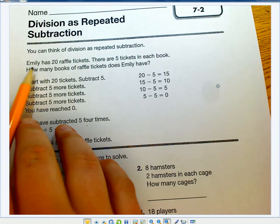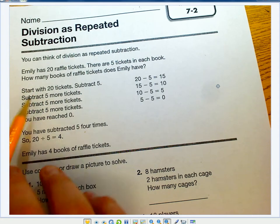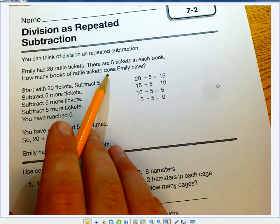So this problem says: Emily has 20 raffle tickets. There are 5 tickets in each book. How many books of raffle tickets does Emily have?